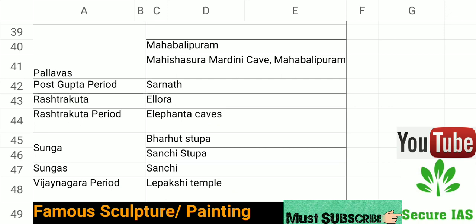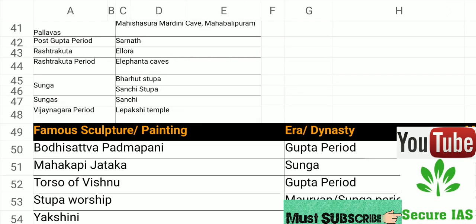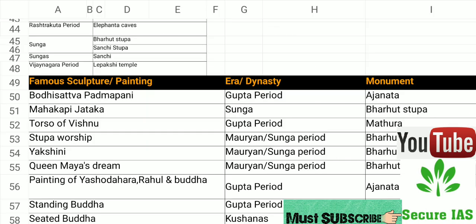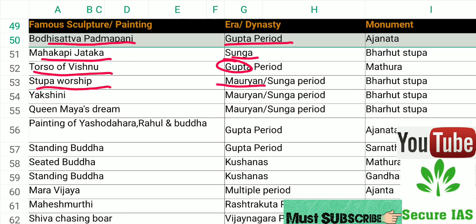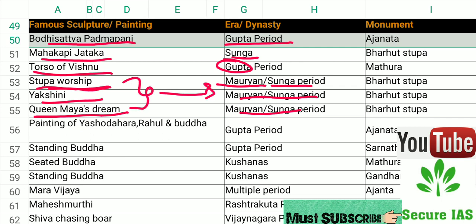Now moving to sculptures: Bodhisattva Padmapani was made during the Gupta period. Mahakapi Jataka is associated with the Sunga period. Torso of Vishnu belongs to the Gupta period. Stupa worship, Yakshini, and Queen Maya's Dream are all related to the Maurya and Sunga periods.